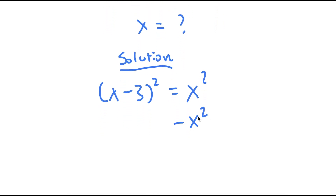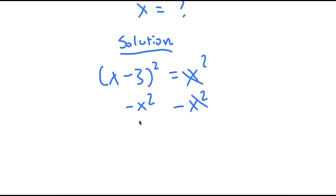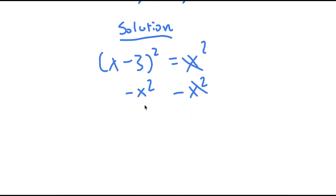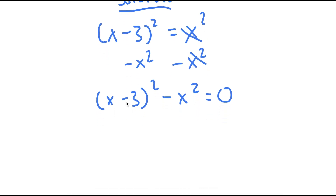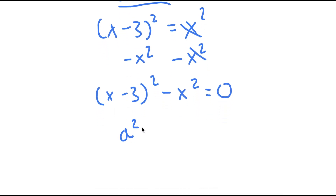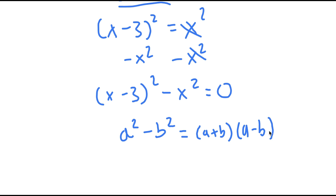I'm going to subtract x squared on both sides. So now I have x minus 3 squared minus x squared is equal to 0. Now, if I have something in the form a squared minus b squared, this is equal to a plus b times a minus b.